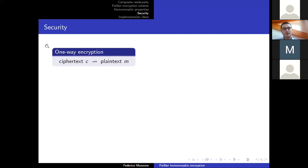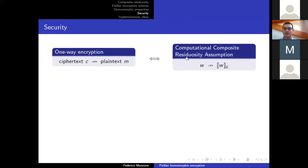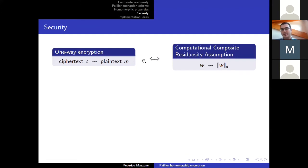The corresponding conjecture for this security requirement is just the computational assumption. It is equivalent here: we are asking that from the ciphertext, we are not able to go back to the plaintext. The ciphertext was just the map of the plaintext and a random quantity. So if we are not able to compute the class, then we are not able to go from the ciphertext to the plaintext.